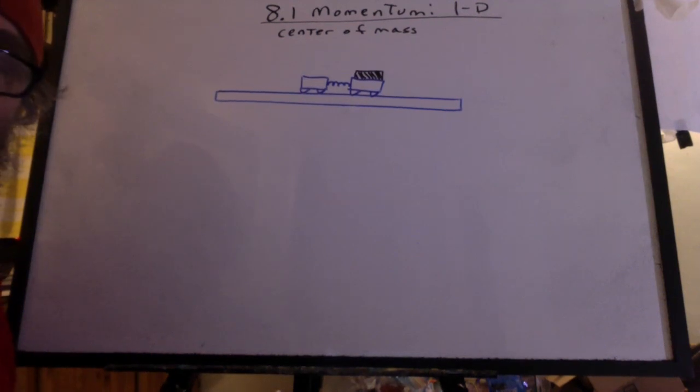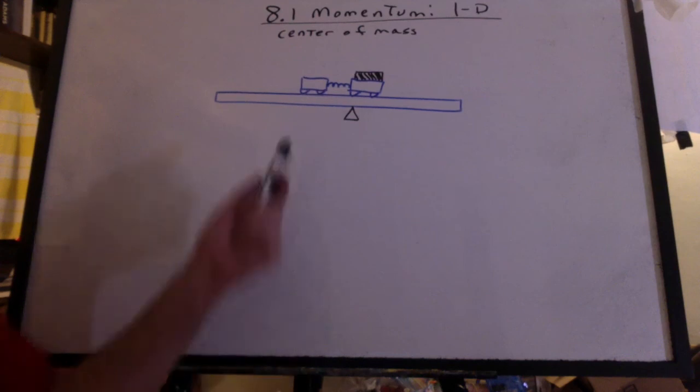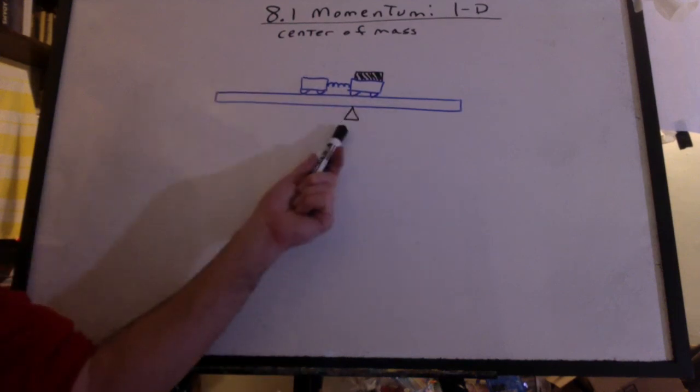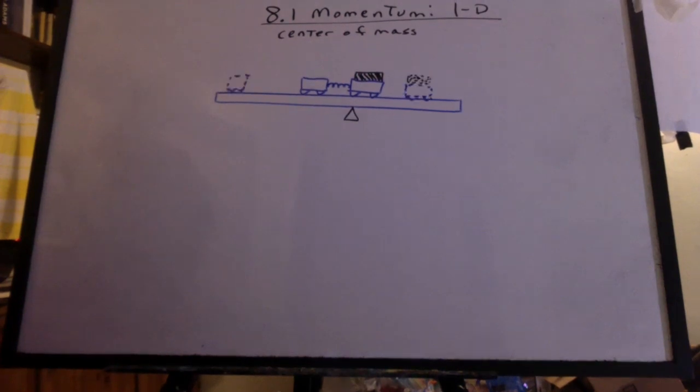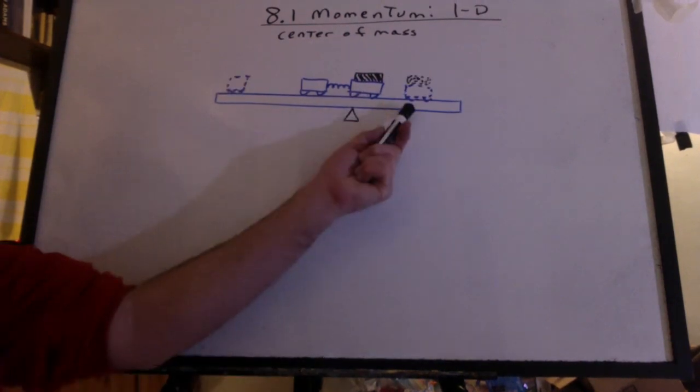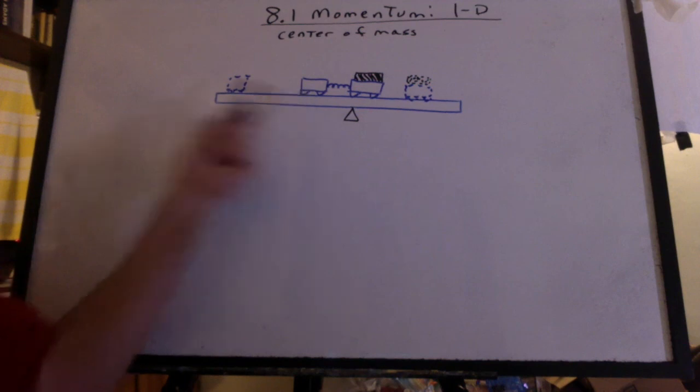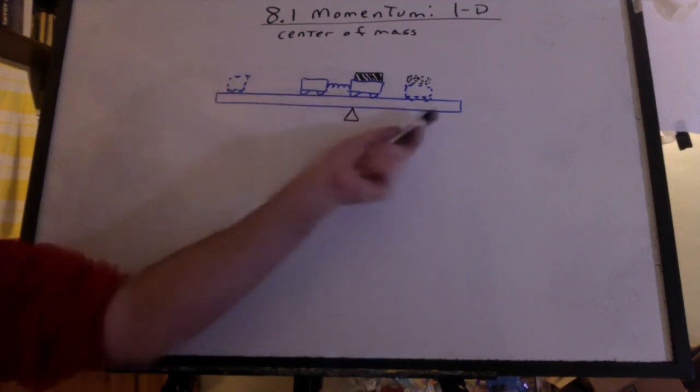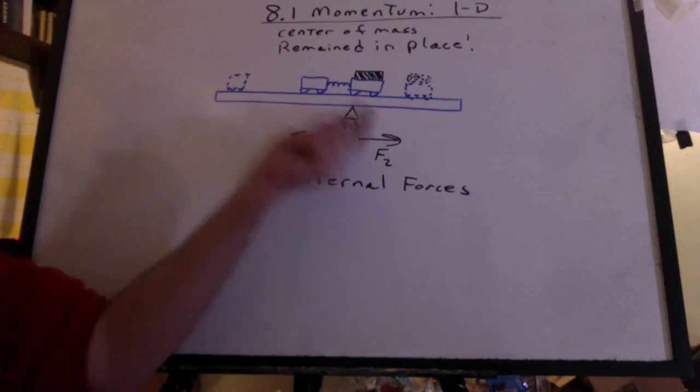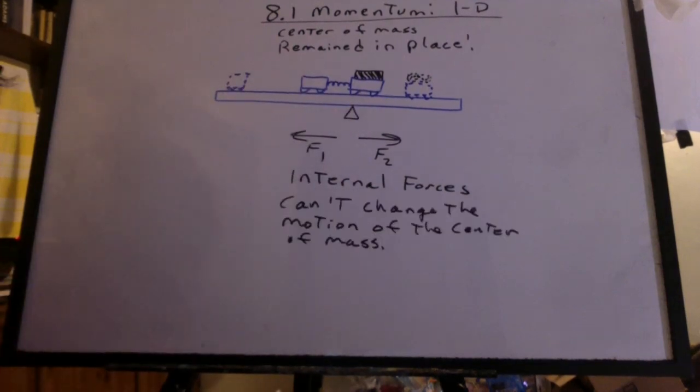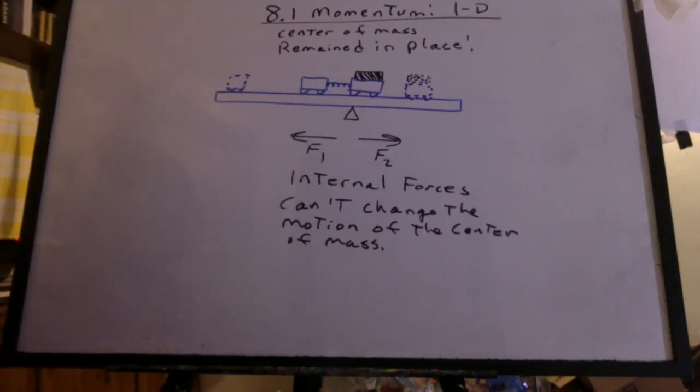What about the center of mass? I did a demo with the carts where I balanced the whole system on a pivot. And then I triggered the carts and they shot apart. The cart with more mass didn't go so far. The lightweight cart went really far. But the system stayed in balance. What does that tell us about the center of mass? It remained in place. Remember, these are internal forces. They can't change the motion of the center of mass.